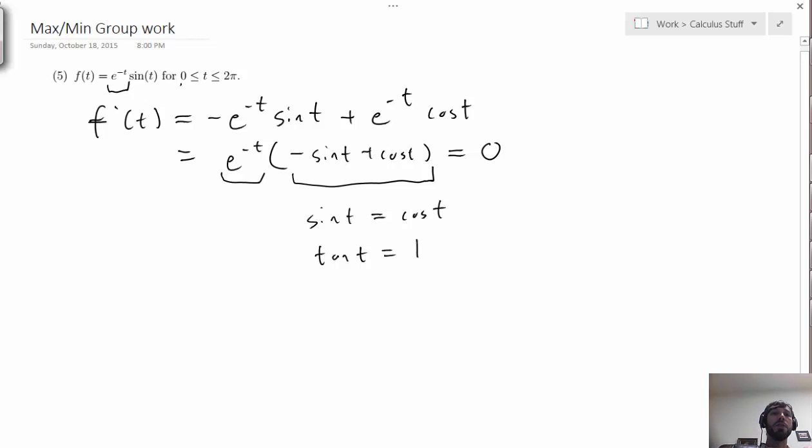On the given interval 0 to 2π there are two places where tangent t is equal to 1. The ways to think about that are you could think of it as the ratio of sine to cosine, but also it's useful to think of this as the slope of the line which connects the origin to the unit circle.